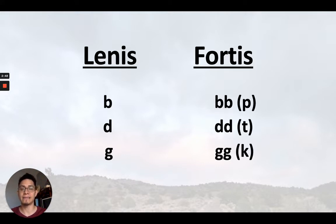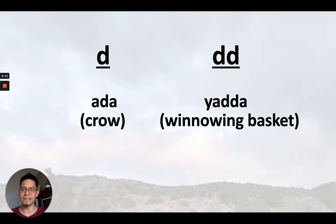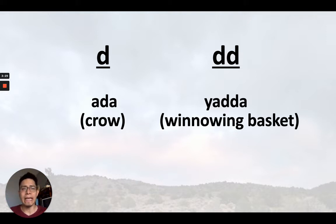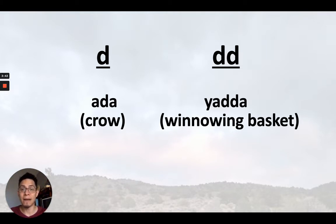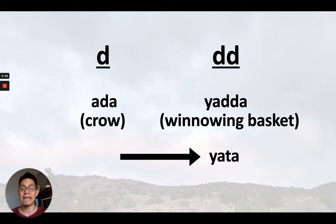Let's look more closely at some specific examples. First, in other dialects, what you see in the parentheses is the sound that other dialects would use. So a double b would be a p, double d would be a t, double g would be a k. Now let's look at some specific examples, starting with the single d versus the double d. The single d can be heard in the word 'ara,' meaning crow. Notice it's very quick, almost like a flap of your tongue — like in the phrase 'yada yada yada,' that d is very quick and short. Compared to the double d sound in the word for winnowing basket, 'yada' — notice it's harder, more forceful. Other dialects pronounce it with a t.